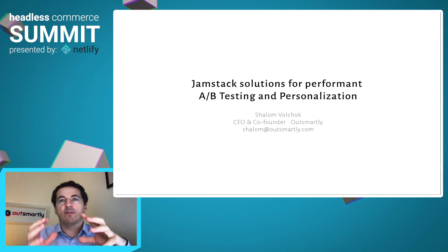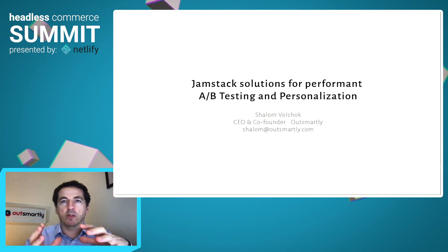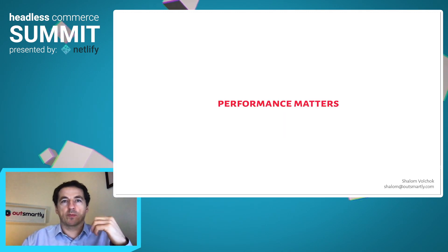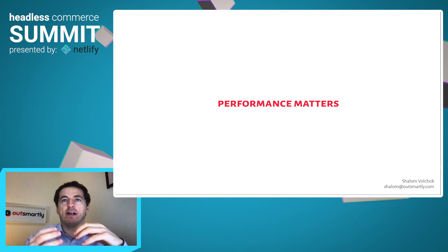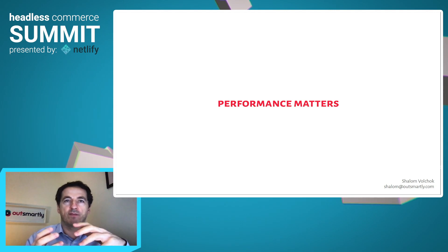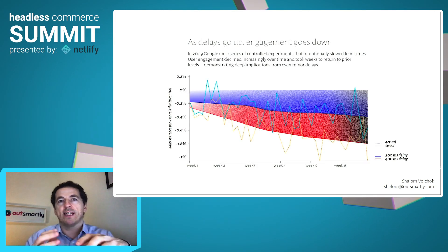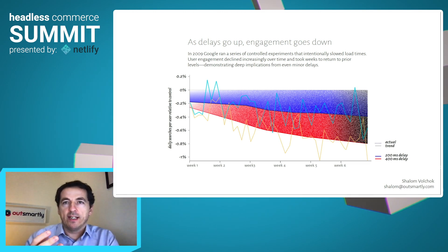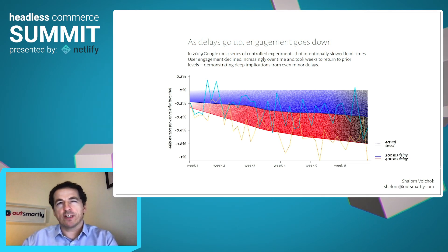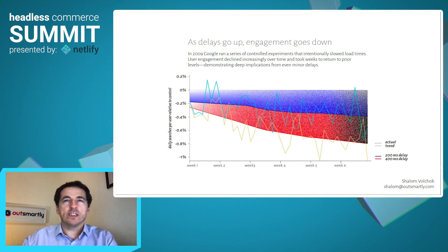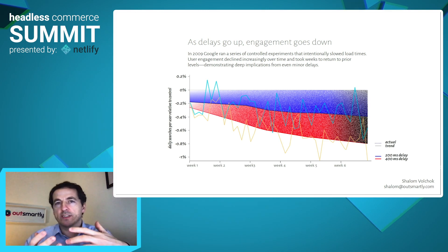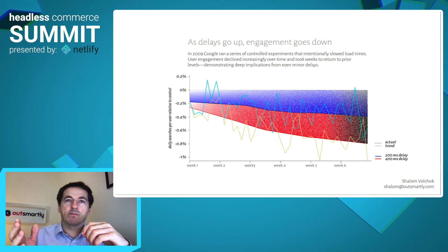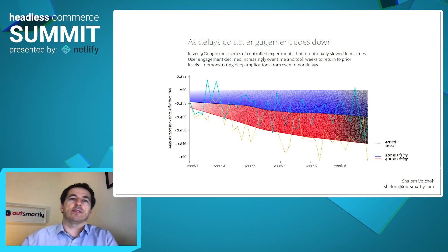Probably the single biggest feature that has drawn me to the Jamstack is the promise of phenomenal performance, so I'm going to start with performance. Performance matters, and I'm going to start by talking about Google as they have been a long-time thought leader in the field of performance. One example is this next slide from a 2009 Google study. It shows data from an experiment where they artificially delayed the response times for search results by 200 and 400 milliseconds. Over the course of the experiment, they saw decreases in both the frequency of searches and the number of searches. And even more interestingly, as they removed the delay, it took a number of weeks to return to the prior levels of user engagement.